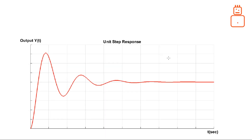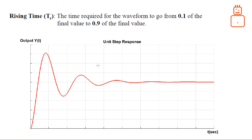We have a typical unit step response for a system and we want to define the time specifications for this unit step response. We start with the rise time T_R. Rise time is the time required for the waveform to go from 0.1, or 10%, of the final value to 0.9, or 90%, of the final steady-state value of that response.